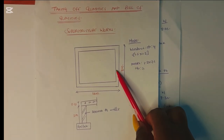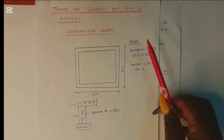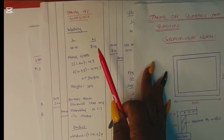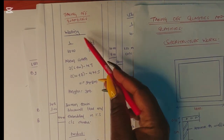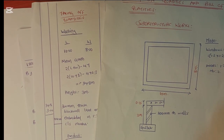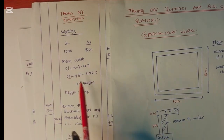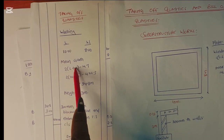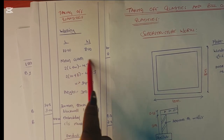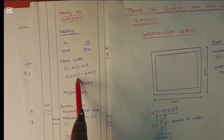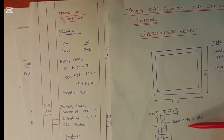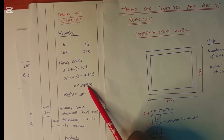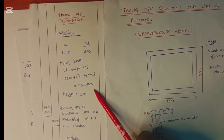We are going to prepare a direct bill — we will avoid the abstracting for now. We are taking off the quantities: we are measuring the walls and the slab only. For the walls we need to get the mini gut, that is the perimeter along the center line. That is 2 into (10 plus 8) minus 4 times the thickness. The thickness is 300 millimeters, so when we subtract that we get 34.8, and our height is 3 meters.